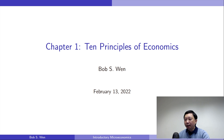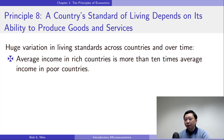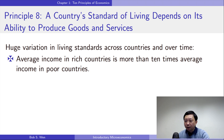Principle number one is: a country's standard of living depends on its ability to produce goods and services. The main reason for the significant differences in living standards among different countries is productivity — that is, the amount of goods and services produced per labour.